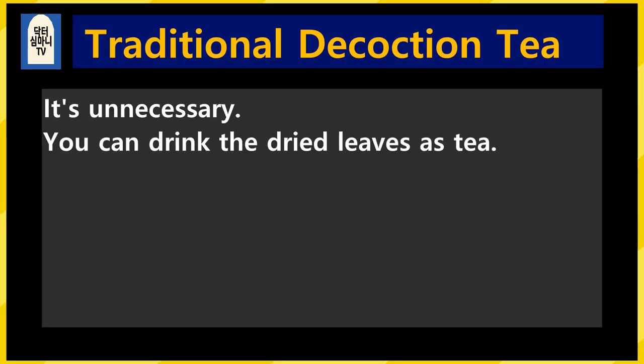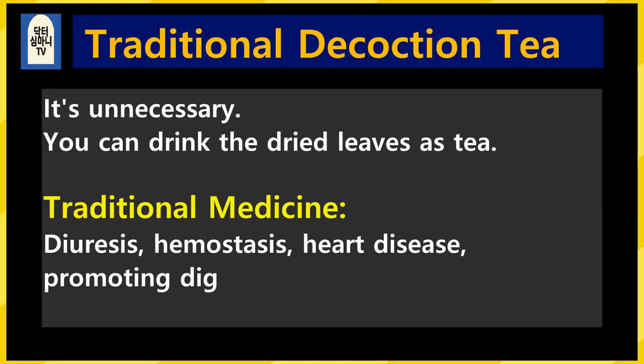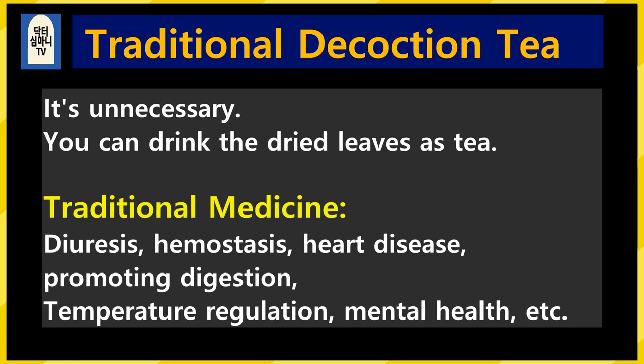Add 1 to 2 teaspoons of dried leaves or powder to 250cc of boiling water, steep for 5 to 10 minutes, and drink it like tea. You can drink it all at once or in divided doses about 50 minutes after a meal. There are a variety of special green tea brands made with additional components such as herbs, spices, or fruit. Traditional medicinal decoction tea is unnecessary — even drinking dried leaf tea extracts almost all of the active components, so there is no need to boil for a long time. Green tea has been used in traditional medicine for diuresis, hemostasis, heart disease, promoting digestion, regulating body temperature, and mental health.